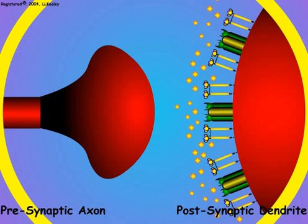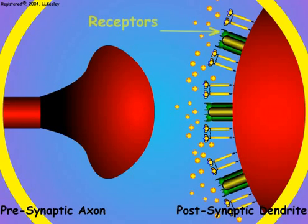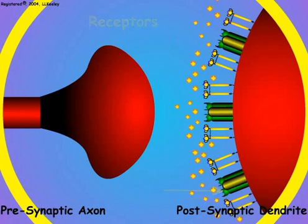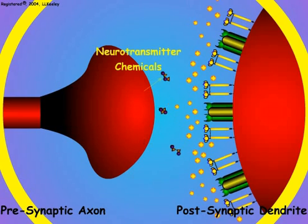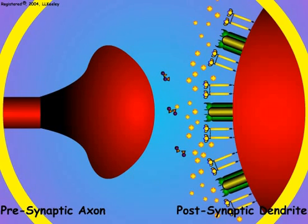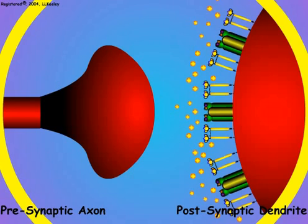The synaptic membrane of the postsynaptic dendrite has numerous sodium channels that are associated with proteins called receptors. Receptors can detect special chemicals released by the presynaptic axon terminal. When an action potential enters the presynaptic axon terminal, the terminal releases a special chemical called a neurotransmitter. The message encoded in the frequency of the presynaptic action potentials is converted by the presynaptic axon into neurotransmitter chemicals that are released and carry the message across the synaptic gap to the postsynaptic dendrite. The neurotransmitter chemicals bind to the receptor proteins associated with the sodium channels of the postsynaptic membrane.